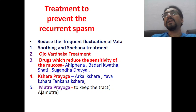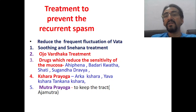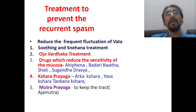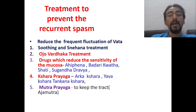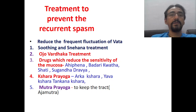To prevent recurrent spasm, which usually occurs in allergic disorders, we need to reduce frequent fluctuation of vata. Soothing snehana treatment should be given, ojo vartakara treatment should be given, and drugs which reduce sensitivity of the mucosa — especially in allergy-like conditions — such as rahifena, badrika, vata shati, and some sukanda dravyas can be given. Kshara prayoga — arka kshara, yava kshara, and tankana kshara — can also be done to maintain pH. Mutra prayoga, particularly aja mutra prayoga, has been mentioned in Ulbaka chikitsa by Kashyapa.